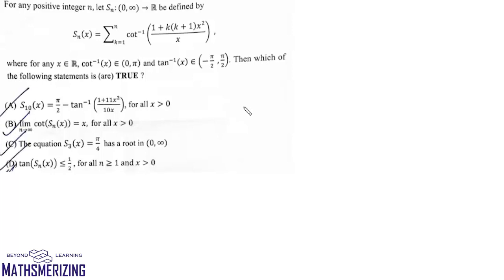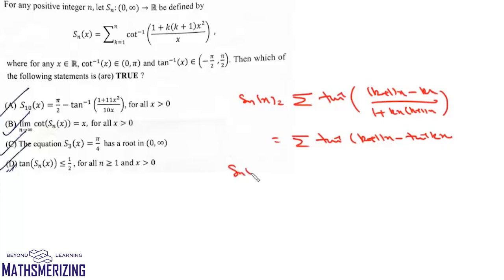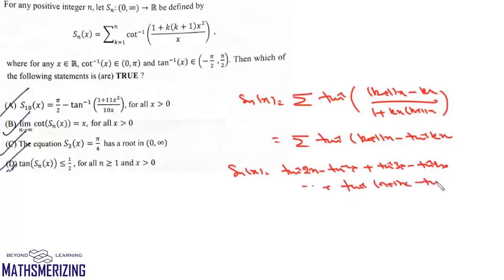The next question is a standard question. We can write S_n(x) as the summation of tan inverse of ((k+1)x - kx) / (1 + kx·(k+1)x), which equals the summation of tan inverse(k+1)x minus tan inverse(kx). Putting in the values, the summation starts from 1: tan inverse(2x) minus tan inverse(x), plus tan inverse(3x) minus tan inverse(2x), and finally up to tan inverse(n+1)x minus tan inverse(nx).